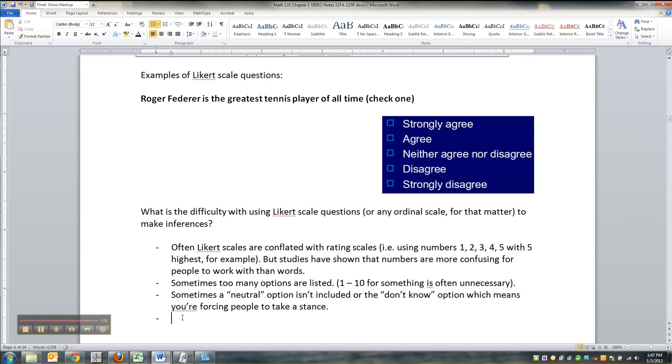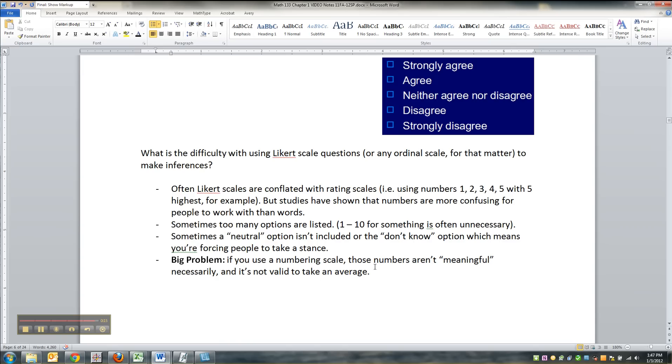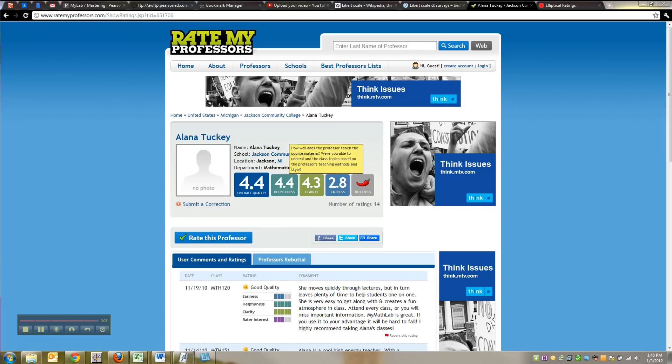But the big problem, in my opinion and many statisticians' opinion: if you use a numbering scale, those numbers aren't meaningful to average. If you say, I'm going to scale you on one through five where one is strongly disagree and five is strongly agree, and then I start giving you an average, that doesn't necessarily mean anything because the numbers one through five were no good to begin with. For example, my Rate My Professor thing - what does 4.4 mean? Who knows?